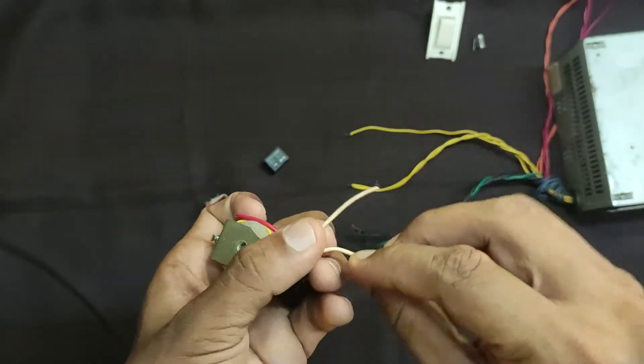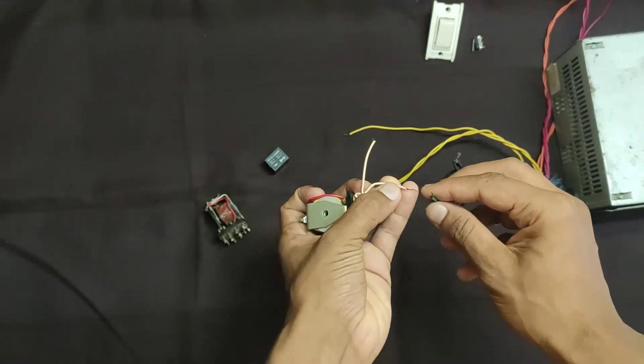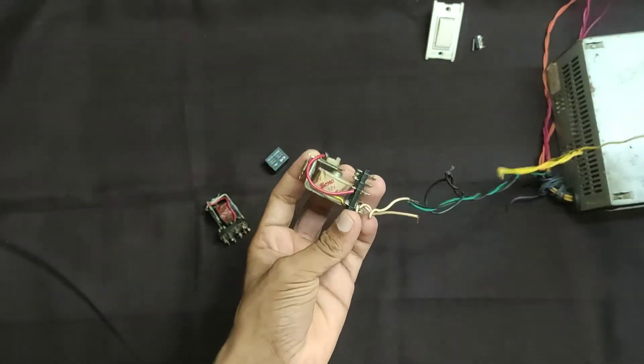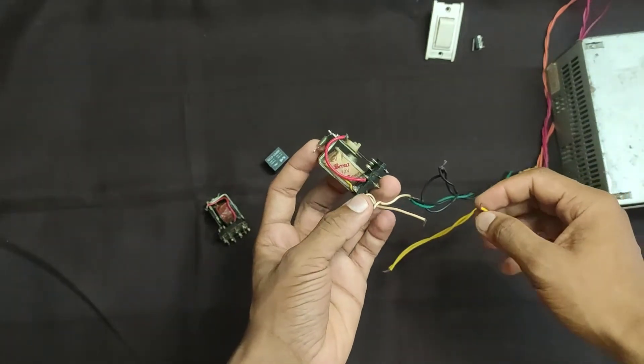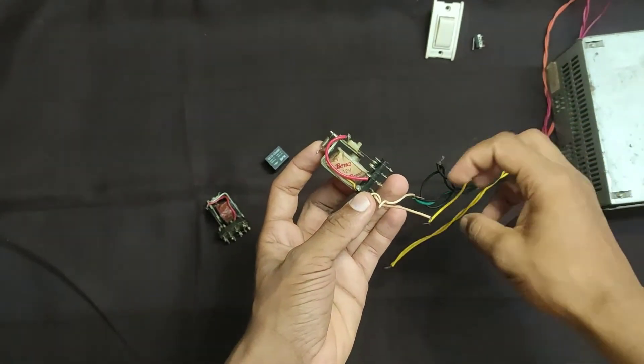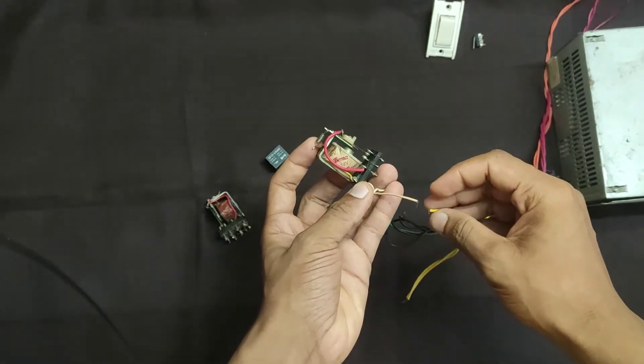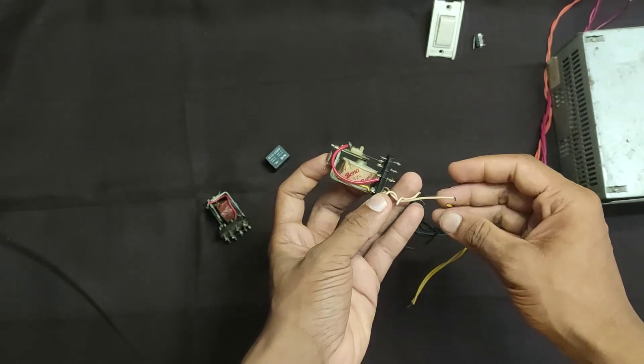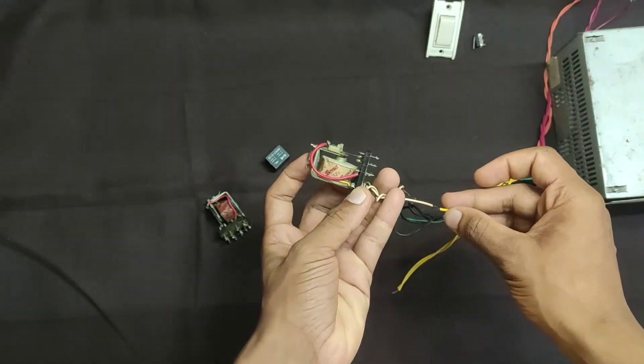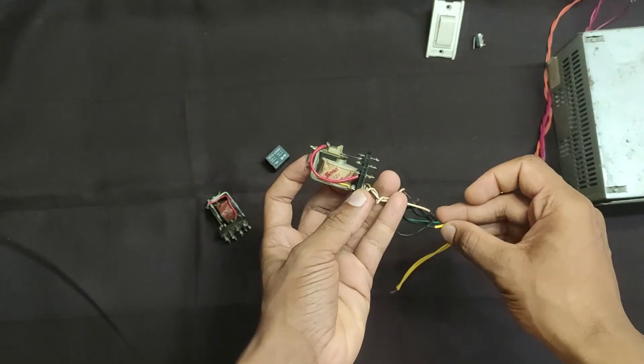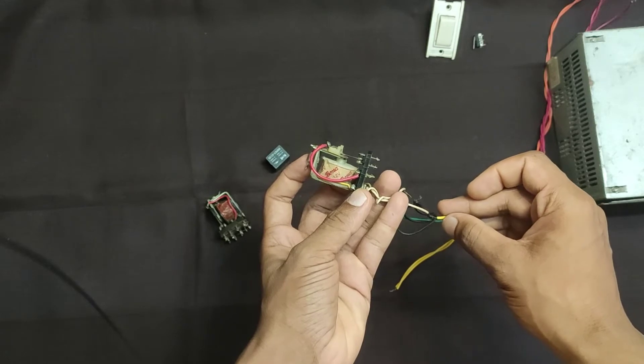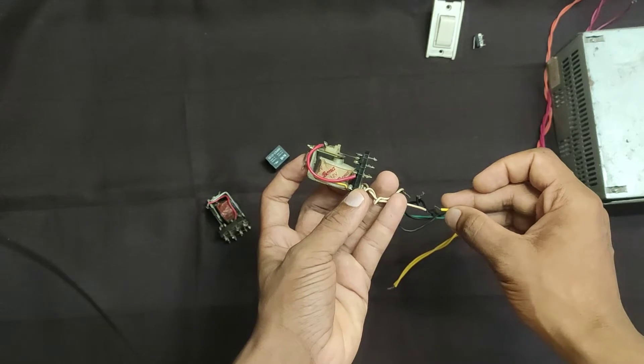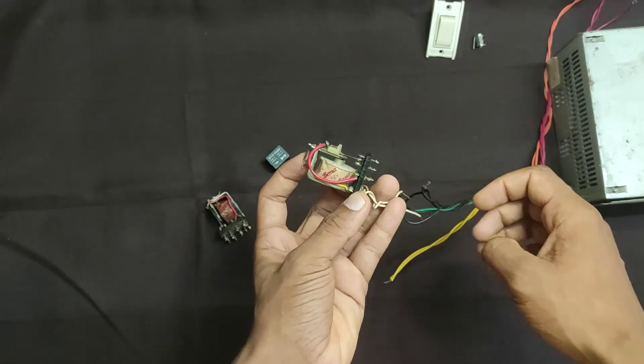These two are the coil terminals. Now I am going to connect it to the supply. You can see that contact is moving. Let me zoom in.